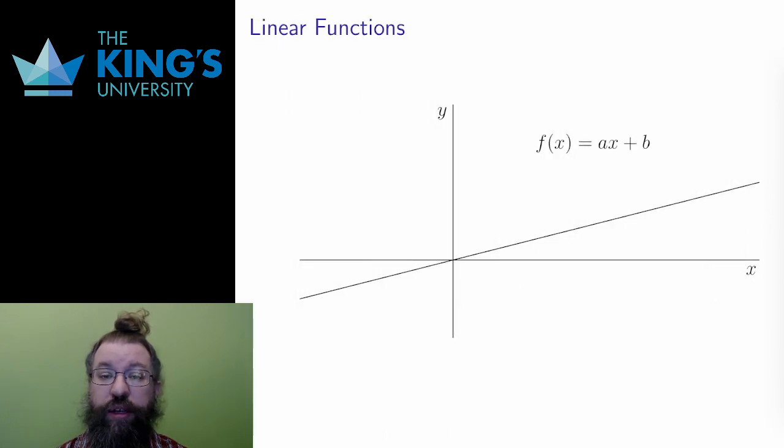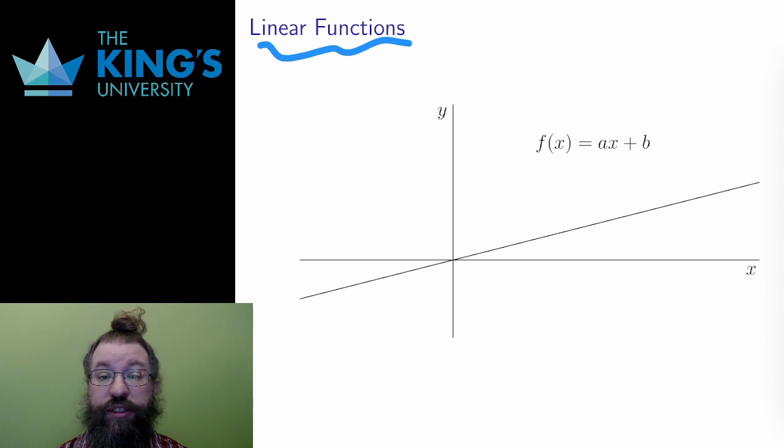The next types of functions are linear functions. Linear means like a line, and these functions indeed have graphs which are straight lines. We talked about equations of lines in last week's video, so it should come as no surprise that the form for a linear function is a linear equation, f of x equals ax plus b, where a and b are some constants.